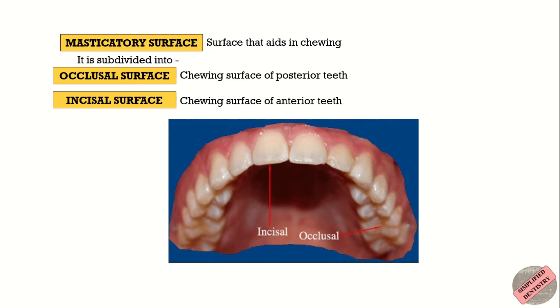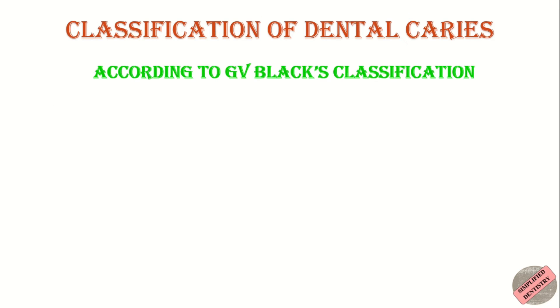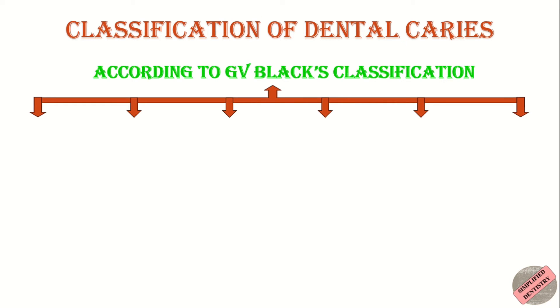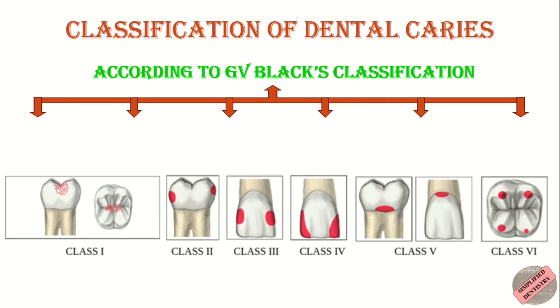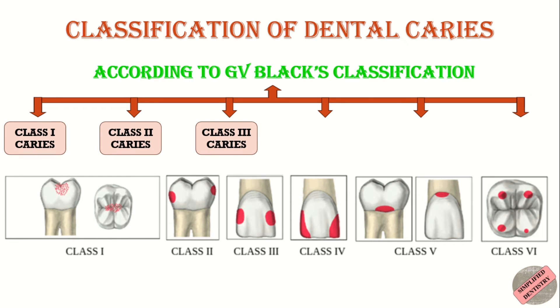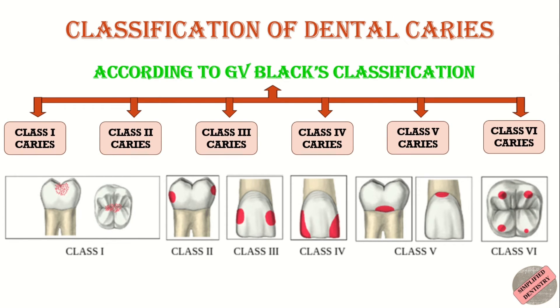According to GV Black's classification, dental caries is of six types: Class 1, Class 2, Class 3, Class 4, Class 5, and Class 6 caries.